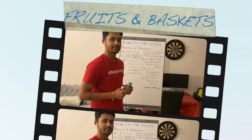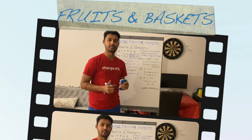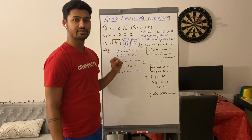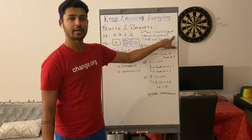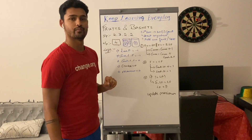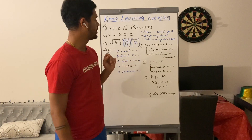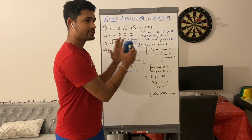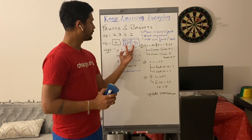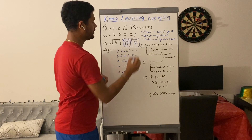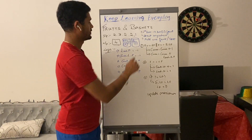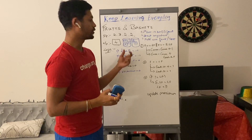Hello everyone, this is Nikash here and I am back with a new problem today. The problem we are going to solve is Fruits into Baskets, and this is one of the important problems asked in Google interviews. You have been given an array of integers where index i will be producing a tree of type i fruit. You have two baskets, and the condition is every time you reach an index you have to pick one fruit. You need to have only two different types of fruits, and we need to find the maximum number of fruits we can put in these two baskets.